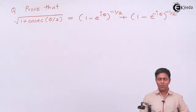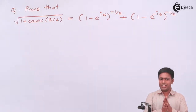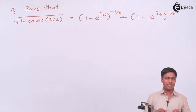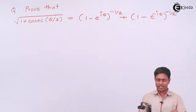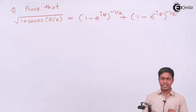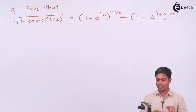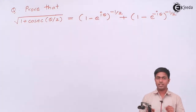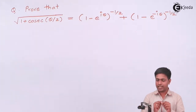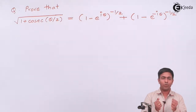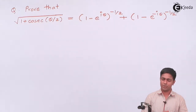Hey guys, in this problem we have to prove that square root of (1 + cosec θ/2) is equal to (1 - e^(iθ))^(-1/2) plus (1 - e^(-iθ))^(-1/2). Now the question is how to prove this.